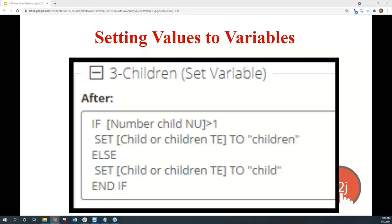Behind this question is the assumption that you have already asked the end user whether they had children before branching them to 'how many children do you have.' If you didn't ask that question ahead of time, you could script logic that tests if number_child is greater than one and number_child does not equal zero. It's probably best practice to ask if they have children first and then ask follow-up questions only to those who respond yes.